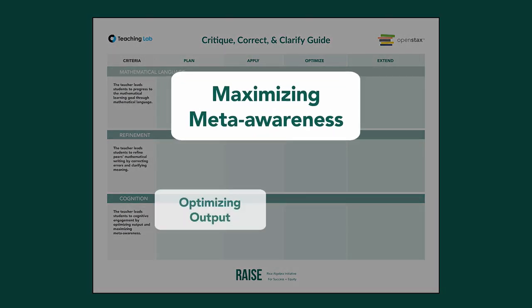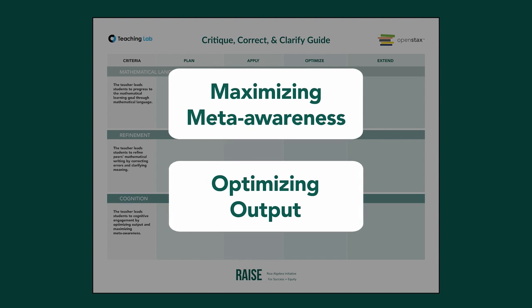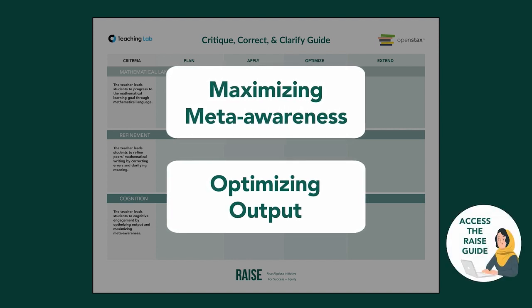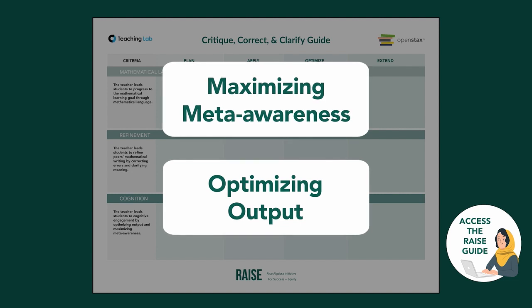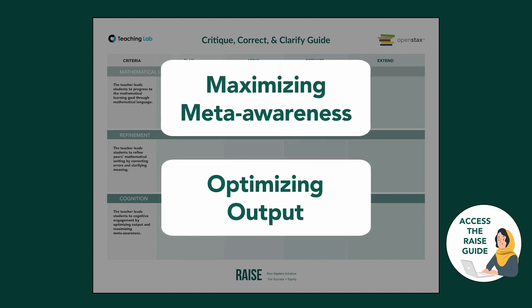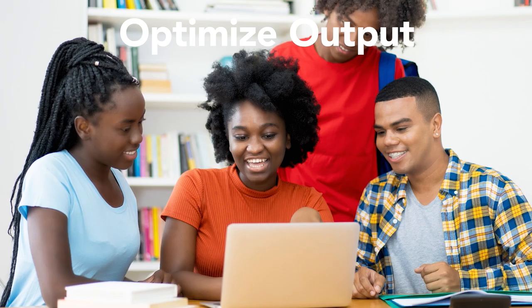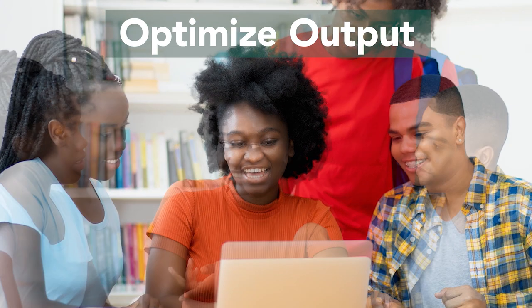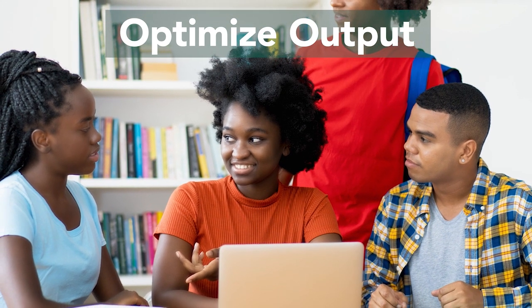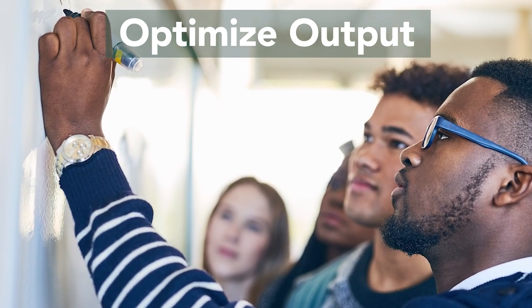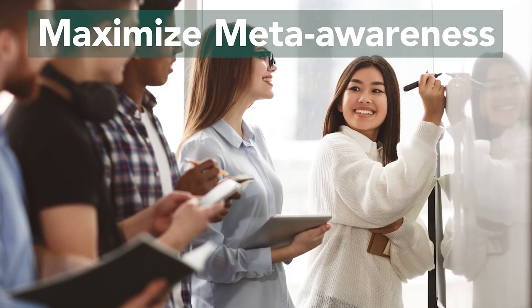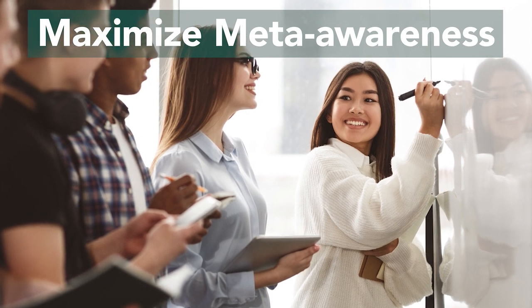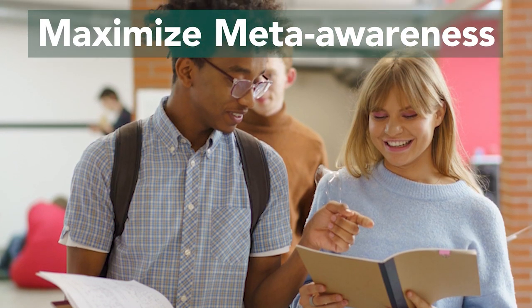Maximizing meta-awareness and optimizing output are layered principles within the Critique, Correct, and Clarify mathematical language routine. Take a moment now to reference your guide as we explain these two principles. We promote opportunities for students to optimize output — that's the chance to express thinking orally, visually, and in writing. This looks like students sharing ideas in pairs, small groups, and to the whole class using a variety of expressive methods. Simultaneously, we facilitate opportunities for students to maximize their meta-awareness — that's the conscious thinking about their own thought processes and language use. This looks like students using and refining their mathematical language during conversation to be better understood and to access the mathematical thinking of their peers.